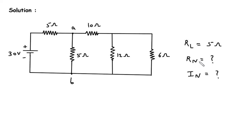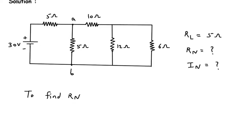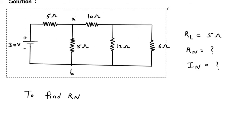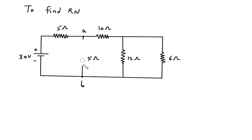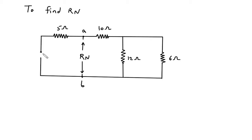First we will find Norton's resistance, that is Rn. To find Rn, we have to turn off all the independent sources and remove RL. So first we will remove RL, and between terminal A and B, this will be our Rn. We have to turn off this independent voltage source. When we turn off an independent voltage source, it will be short circuited. Now we have to calculate Rn.